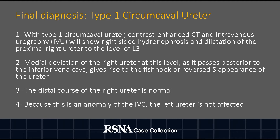Medial deviation of the right ureter at this level, as it passes posterior to the IVC, gives rise to the fishhook or reverse S appearance of the ureter. The distal course of the right ureter is normal. Because this is an anomaly of the IVC, the left ureter is not affected.